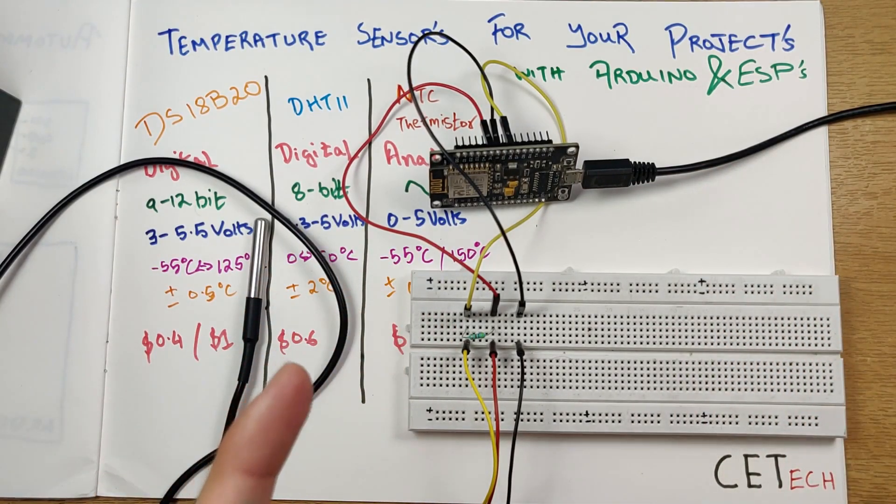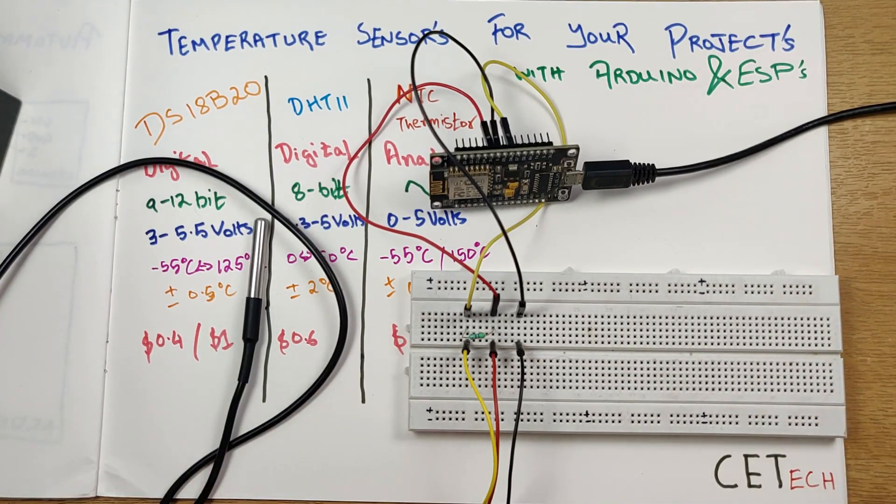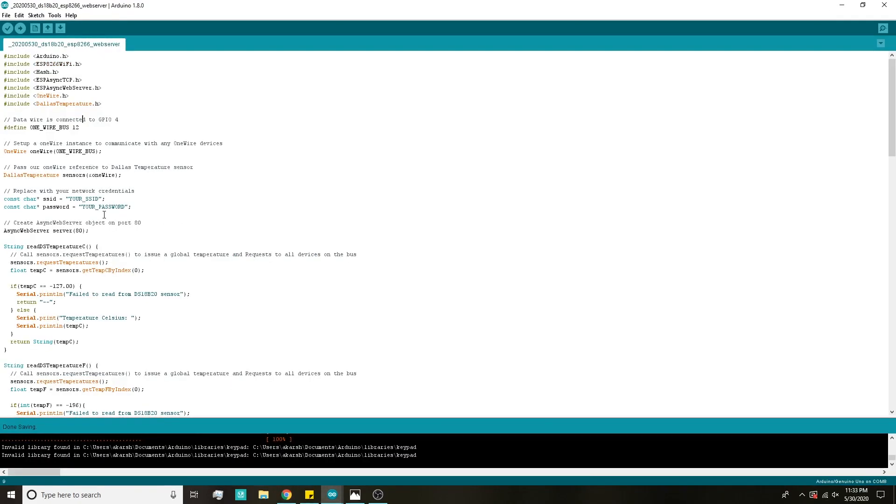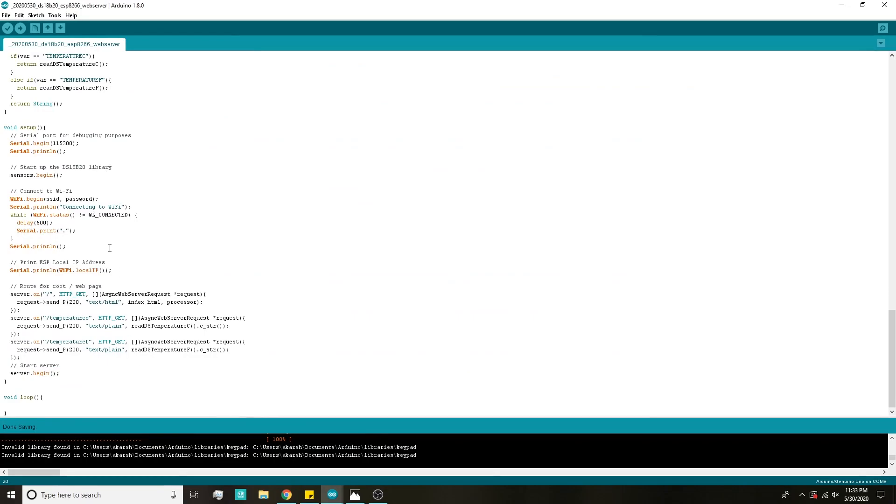So for that let's once again head over to our laptop. Firstly you will need to head over to the GitHub repository that I had mentioned earlier. You need to copy the code present in the ESP8266 temperature web server. Once you copy and paste that to your Arduino IDE over here, you need to change your SSID and the password and pretty much there is no change required elsewhere. Once you're done with that, just upload the code.